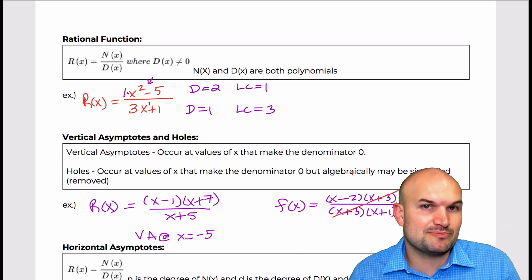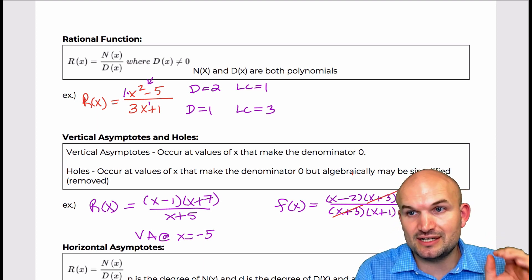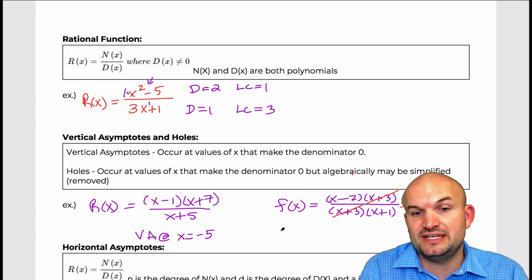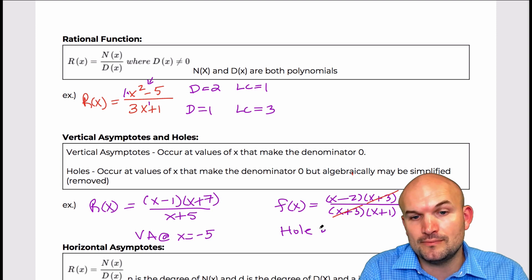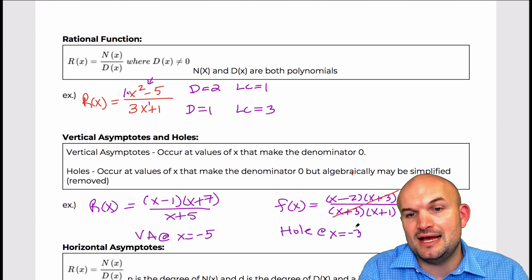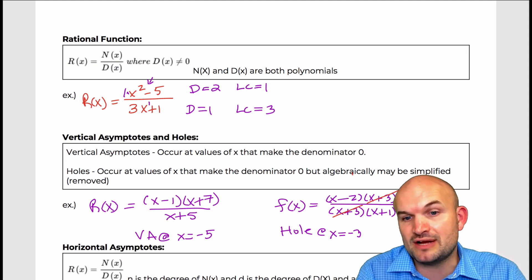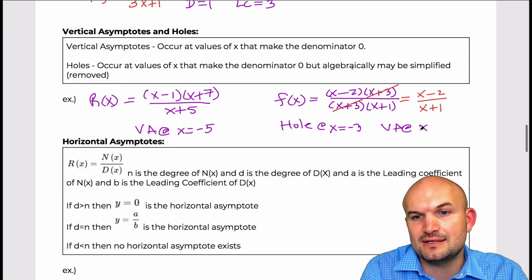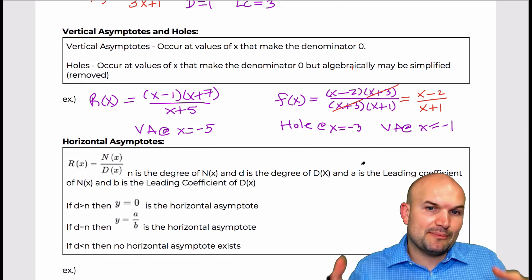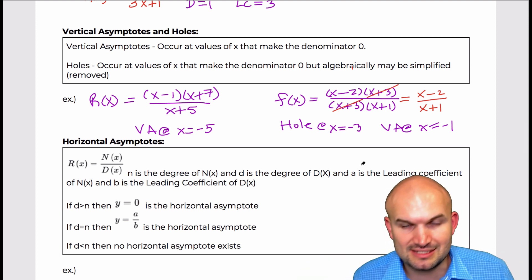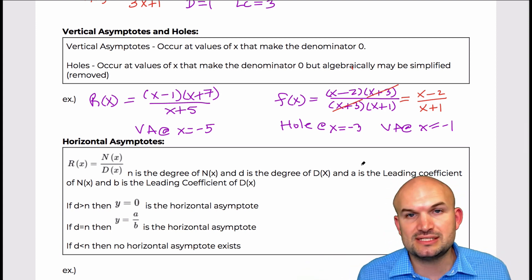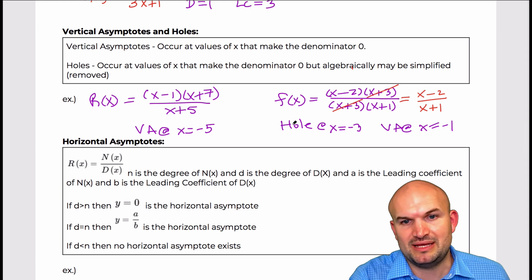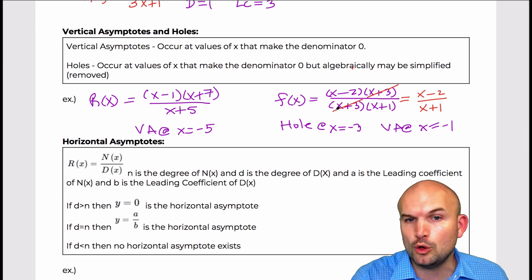However, we can't just pretend like the x plus three never existed, because it still is a discontinuity. x equals negative three is not a value of the domain. So we'd say there's a hole at x equals negative three. And you can see that the x plus one never got removed, so there's still going to be a vertical asymptote at x equals negative one. Just remember: holes get divided out, vertical asymptotes do not. However, they're both discontinuities of the function, so they are both not going to be in the domain.